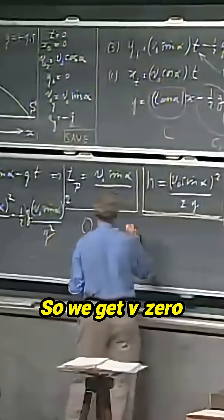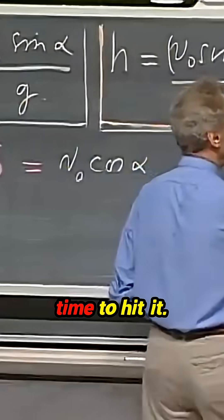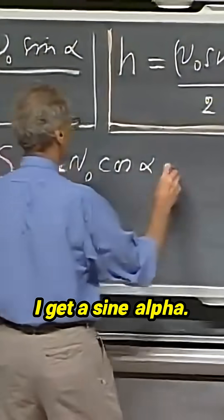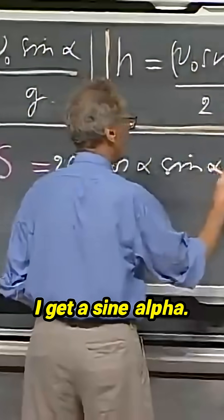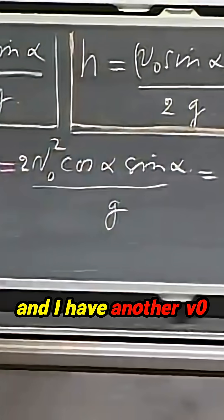So we get v zero cosine alpha times the time to hit it. That is two v zero sine alpha. So I get a two here, I get a sine alpha, and I get a g here, and I have another v zero there.